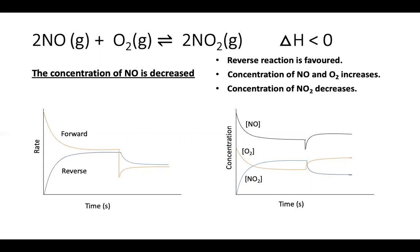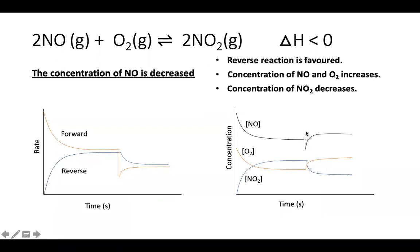On the concentration versus time graph, there is first an equilibrium, then at a certain point the black line (NO) drops — that is the disturbance. The system responds: NO increases, O₂ increases, and NO₂ decreases until a new equilibrium is reached. The jump downward in the NO line clearly shows the disturbance.